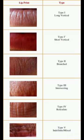Type 2 consists of very short vertical grooves, sometimes intersecting with each other. Type 3 displays grooves that branch out from a central point, resembling a tree-like pattern. Type 4 shows intersecting grooves forming a grid-like pattern. Type 5 is characterized by irregular or indefinite grooves that do not fit into other categories.